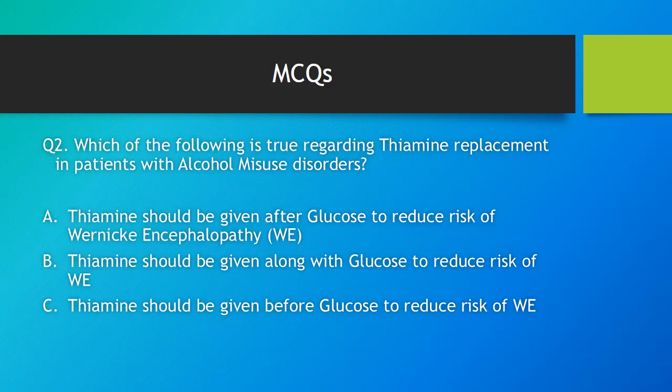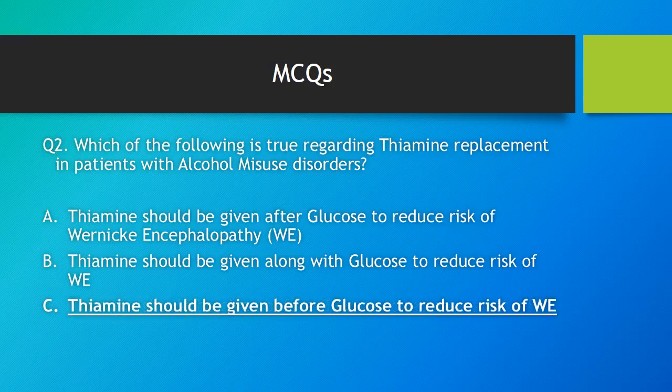Question 2: which of the following is true regarding thiamine replacement in patients with alcohol misuse disorders? The correct answer is option 3: thiamine should be given before glucose to reduce the risk of Wernicke's encephalopathy.